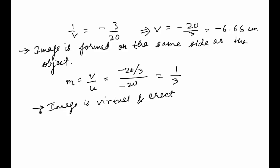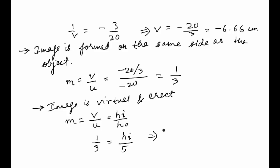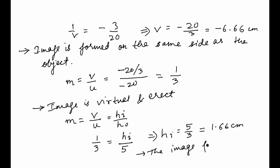We also know that magnification equals height of image divided by height of object. So 1/3 equals height of image divided by 5. Therefore the height of the image is 5/3, which equals approximately 1.66 centimeters. This shows the image is smaller than the object.